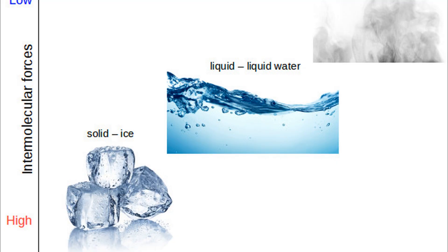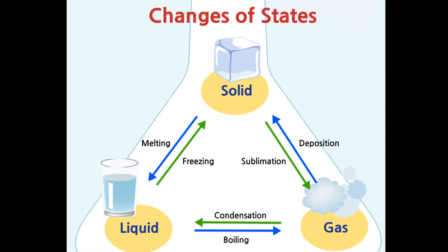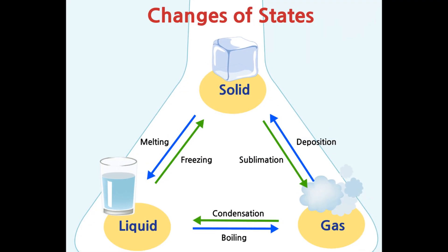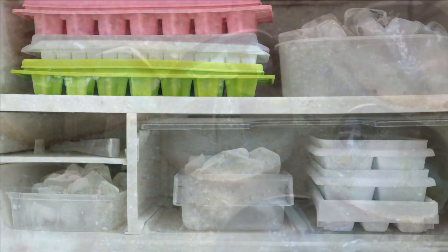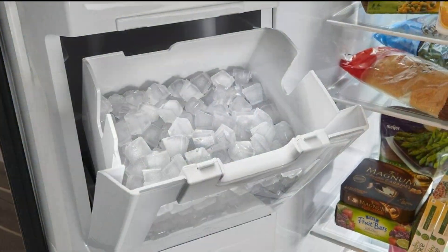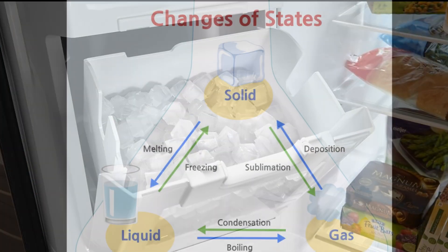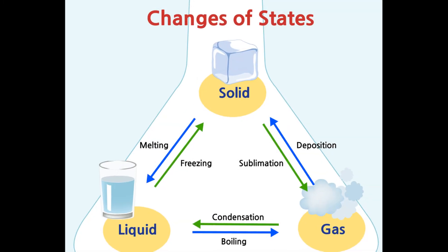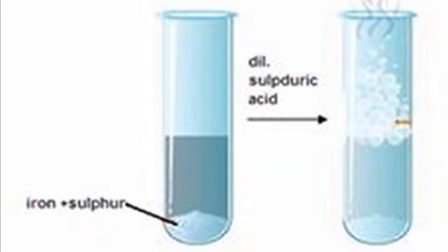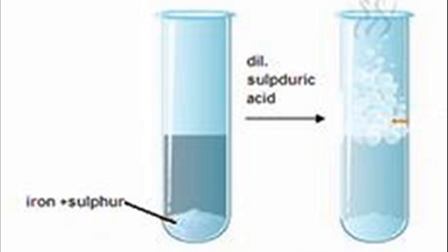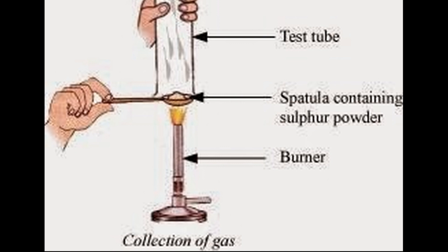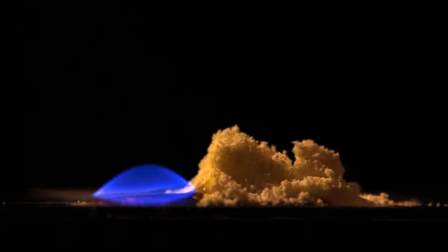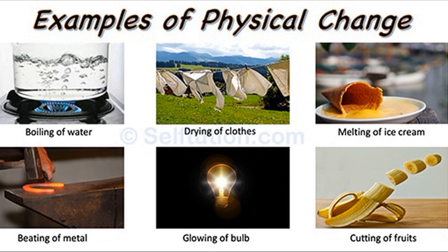Number two, the change is temporary and reversible — that is, the substance changes to its original state on changing the conditions. For example, when a cube of ice is taken out of a refrigerator, it melts and changes into water, then turns again into ice when put back in the refrigerator. Also, if you gently heat some powdered sulfur in a hard glass test tube, it melts into a pale yellow liquid. Stop heating and allow the test tube to cool — molten sulfur quickly changes back to the solid state. These examples prove that physical change is both temporary and reversible.